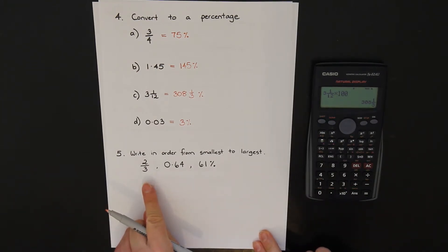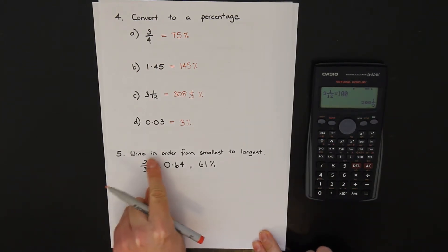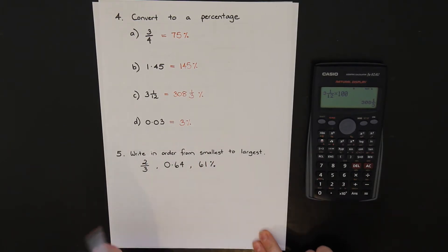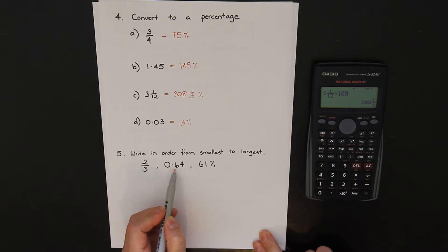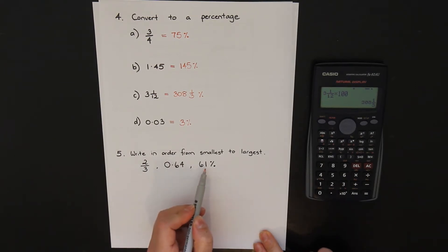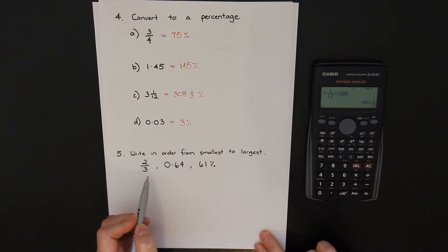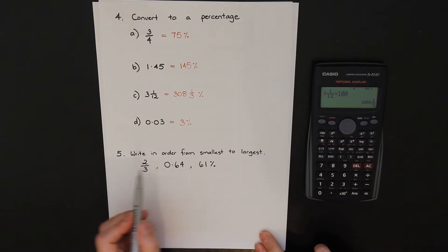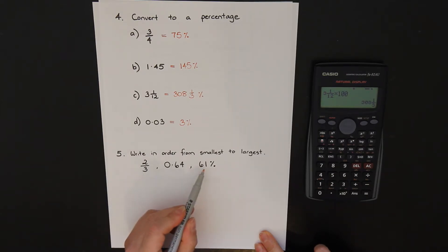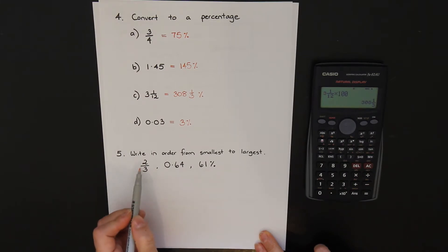Question 5: write in order from smallest to largest. I have a fraction — 2 thirds, a decimal — 0.64, and a percentage — 61%. To compare these it's easiest if they're all in the same form. The easiest to compare is either the decimal or the percentage. Fractions can be a little bit harder to compare because you often have different denominators. So I'm going to change them all to be decimals.